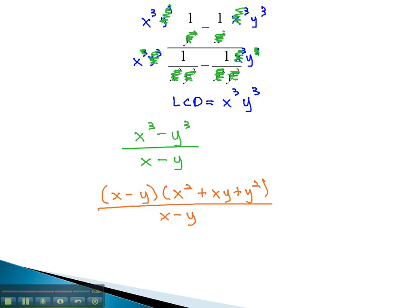Again, you notice that we've got a common factor that can divide out. We're simply left with x squared, plus x y, plus y squared, for our final solution.